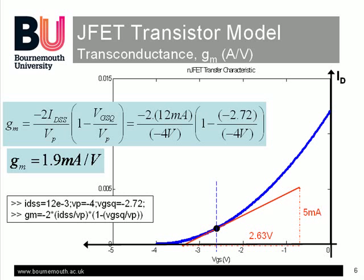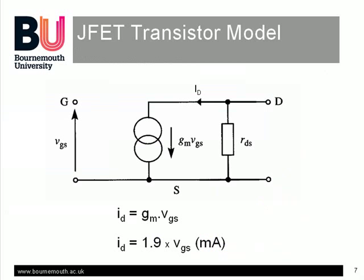This, then, is the JFET model we will be using for the hand calculation analysis of linear circuits. We will simply replace the transistor in the circuit by a current source connected between the source and drain terminals of the circuit, which, in this case, will output a current of 1.9 mA per volt of signal applied between the gate and the source terminals.